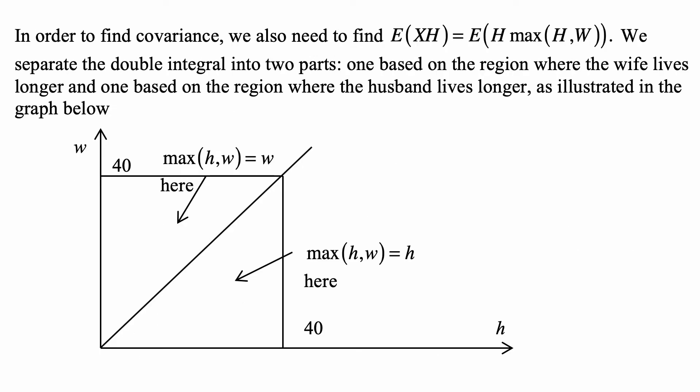In order to find covariance, we also need to find E of X times H, which is the expected value of H times the maximum of H and W. We separate the double integral that we would need to calculate to find this expected value into two parts: one based on the region where the wife lives longer and one based on the region where the husband lives longer, as illustrated in this graph.